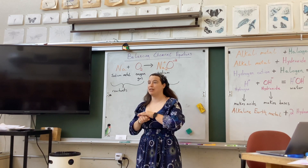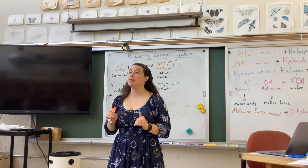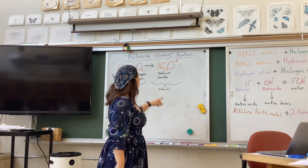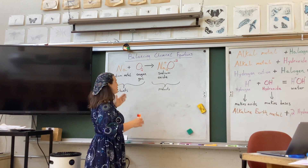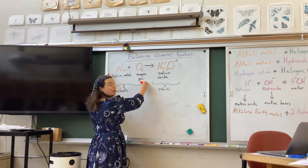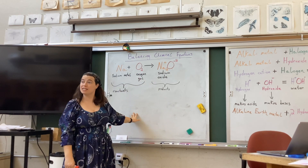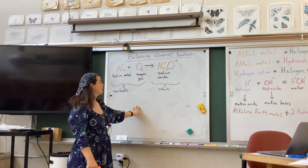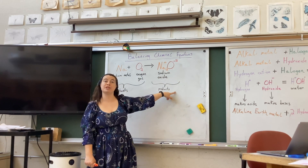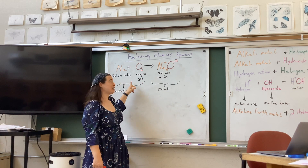The first step to solving an equation that you're trying to balance is to write down the different elements and how many of each thing you've got. What I like to do is write underneath the arrow. By the way, just some vocab to review: on the left side of the equation, we have what are called our reactants — those are the things that are reacting with each other. On the right-hand side of the arrow, we have our products — these are the things that are being produced. A good rule of thumb is the reactants react to produce...